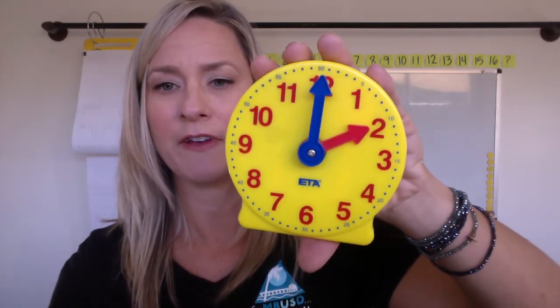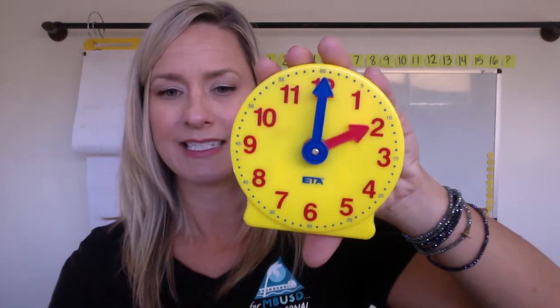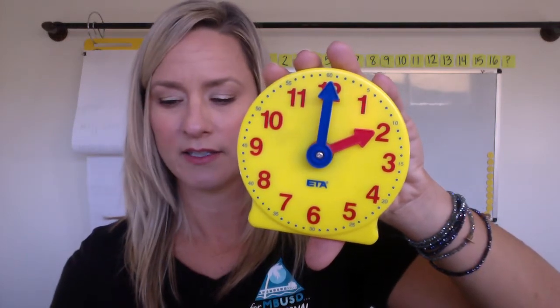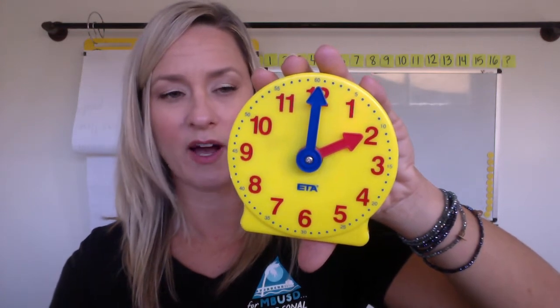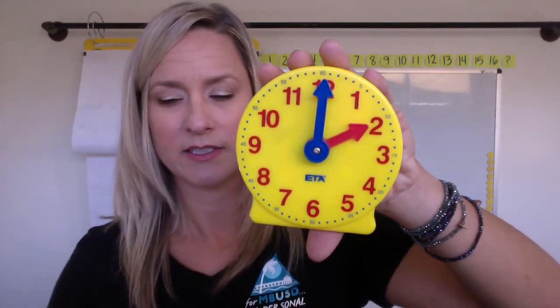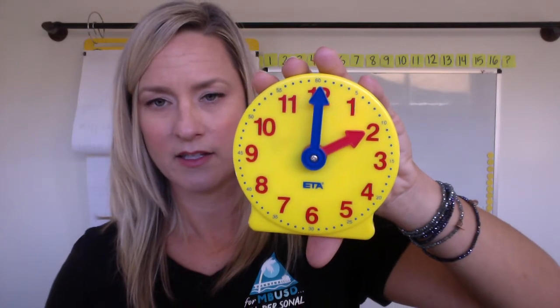So put your clock at two o'clock if you have one. Otherwise, just use mine. I want you to add 15 minutes and tell me what time it is. Start at two and add 15 minutes. And then, of course, if you have the clock, move it. Move the hands.